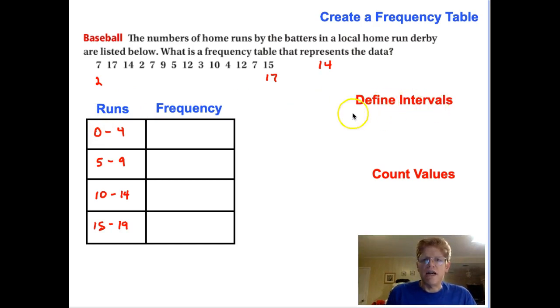And then, once we've defined our intervals, we're going to count our values. So, how many values do we have that fit into each interval? Let's count those up. We have our tally marks for all of our frequencies. Let's go ahead and write in our values. So we'll actually have three here, five here, four, and two. And that's the frequency of each one of those intervals, and that is our frequency table.